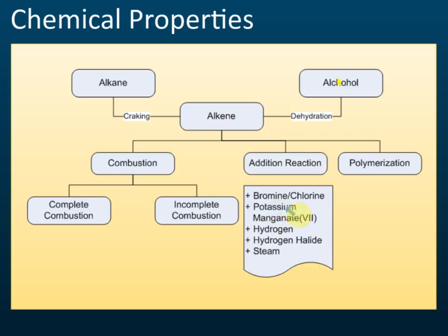We can also add oxygen using potassium permanganate, which provides oxygen to the alkene. We can add hydrogen, or hydrogen halides — such as hydrogen fluoride, hydrogen chloride, hydrogen bromide, and hydrogen iodide. We can also add steam, which is water, into alkene.